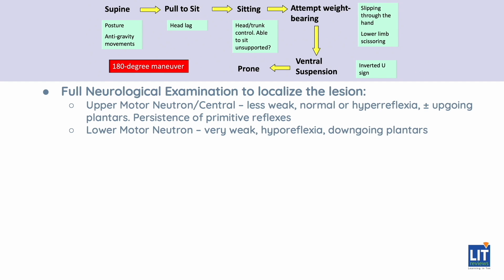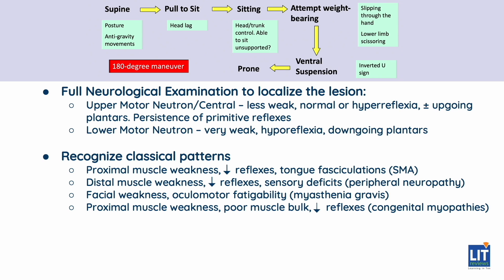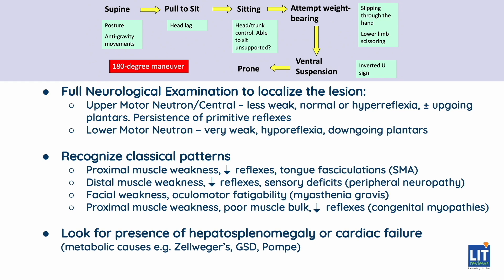Do a full neurological examination to localize the lesion. Infants with hypotonia of central origin tend to be less weak, with either normal or hyperreflexia and persistence of primitive reflexes. Lower motor neuron lesions cause the child to be very weak, with a paucity of antigravity movements and hyporeflexia. Recognize classical patterns — is the weakness more significant in proximal or distal muscle groups? Is there associated facial involvement? Don't forget to check for hepatosplenomegaly or cardiac failure, which may be present in metabolic causes.